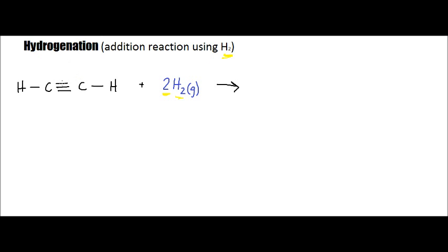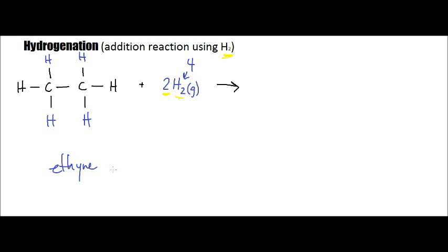One of the triple bonds is no longer going to be there, and it will make room for one pair of those hydrogens. We've got a total of four hydrogens — two times two equals four. So one of the bonds will no longer exist to accommodate the addition of these hydrogen atoms. Then the same thing is going to happen with one of the other remaining bonds, allowing for the bonding of the other remaining hydrogens. So originally we started with an ethyne molecule and we ended with an ethane molecule.